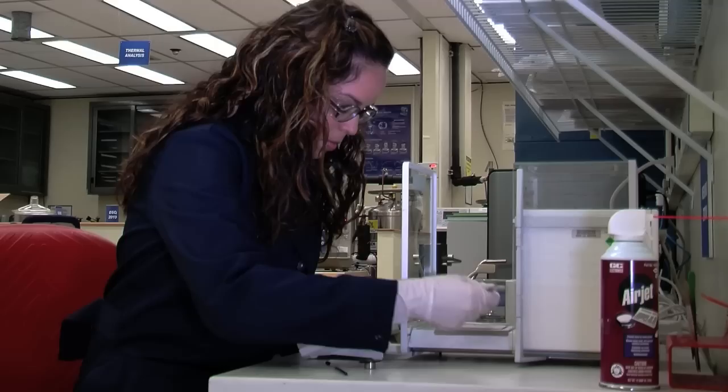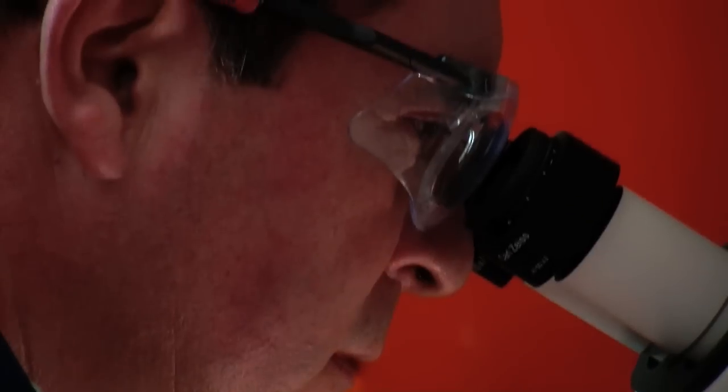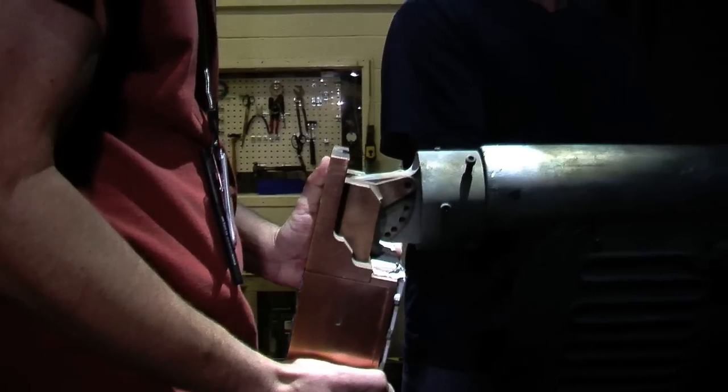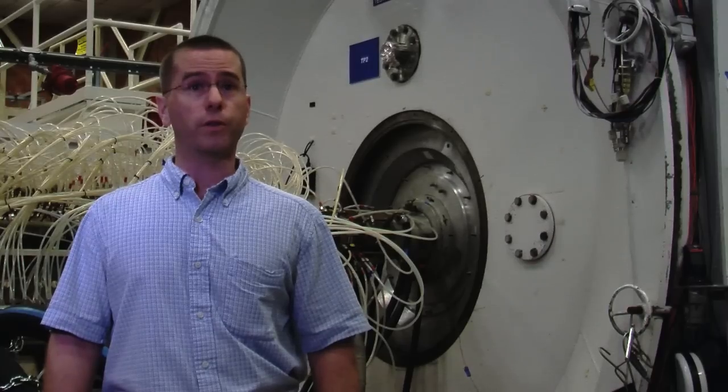Anything related from the simple chemical compound all the way to unknown samples found on an EVA glove, the shuttle window. It's very important for shuttle safety. Our team is a part of the group of community that makes decisions about whether or not the orbiter is safe for reentry.